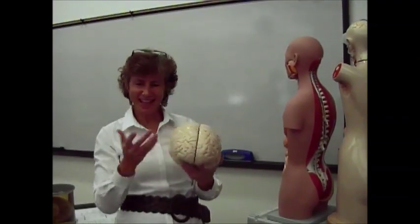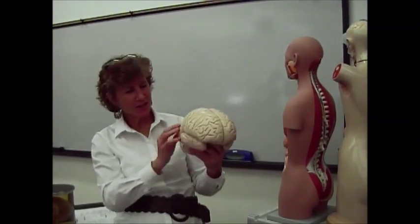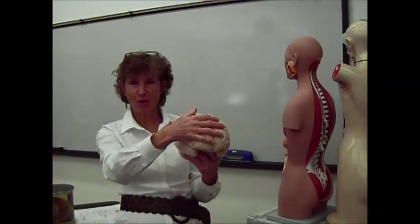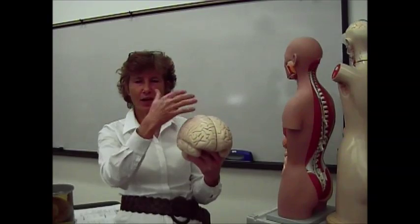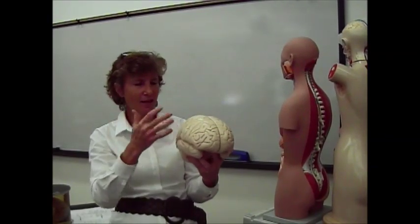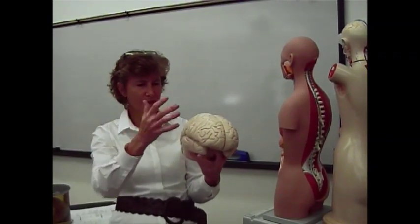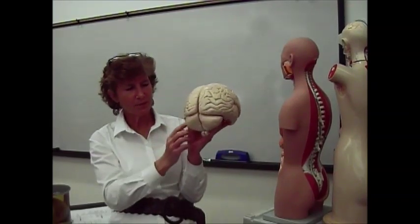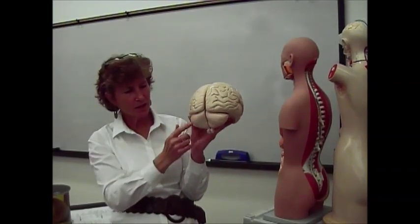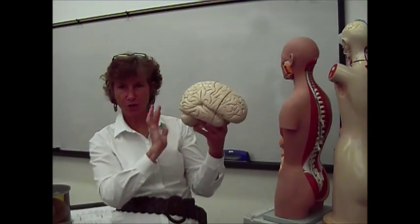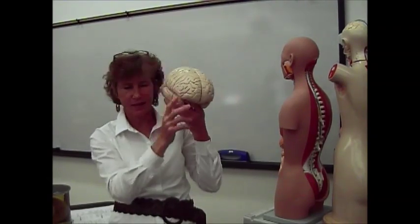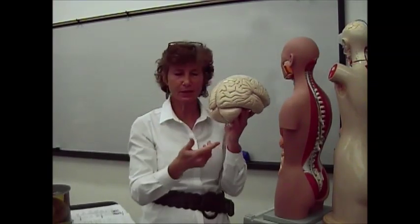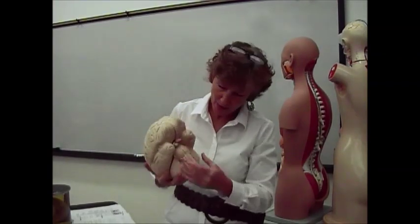You have the cerebrum, which is all this little convoluted curly part. This is your thinking part of your brain — the conscious part where you're making decisions, feelings, thoughts, sending out information. Then you have the cerebellum, which is this layered part of the brain on the posterior side. The cerebellum is involved with coordinating motor movements and different things like that.